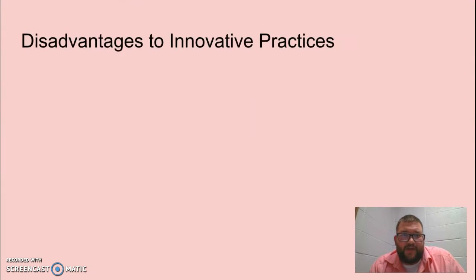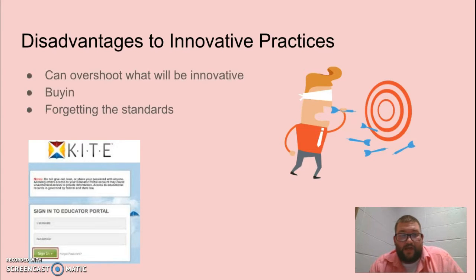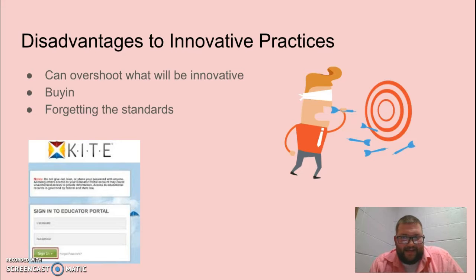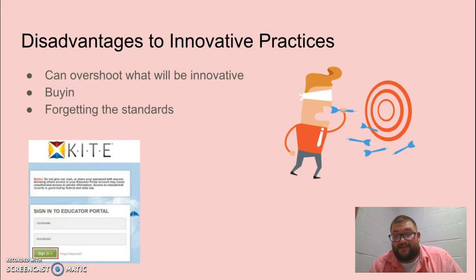But there are some issues that arrive with trying to be innovative. We can overshoot what will actually be innovative — sometimes we go for something that won't be, like Google Glass, which is now only used in a small market. Buy-in can be a disadvantage as well; sometimes an innovation can be so new that teachers or students just cannot buy in. And there's the risk of forgetting the standards — we still have to hit our state standards. That is important.